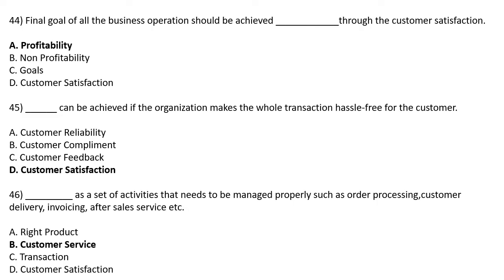The final goal of all business operations should be achieved through — Option A: Profitability, Option B: Non-Profitability, Option C: Goals, Option D: Customer Satisfaction. The correct answer is Option A: Profitability.